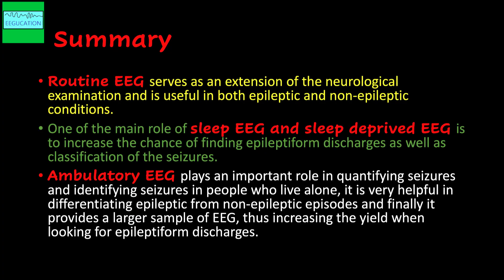In summary: routine EEG serves as an extension of the neurological examination and is useful in both epileptic and non-epileptic conditions. One of the main roles of sleep EEG and sleep-deprived EEG is to increase the chance of finding epileptiform discharges and to classify seizures. Ambulatory EEG plays an important role in quantifying seizures and identifying seizures in people who live alone. It is very helpful in differentiating epileptic from non-epileptic episodes and provides a large EEG sample, thereby increasing the yield when looking for epileptiform discharges.